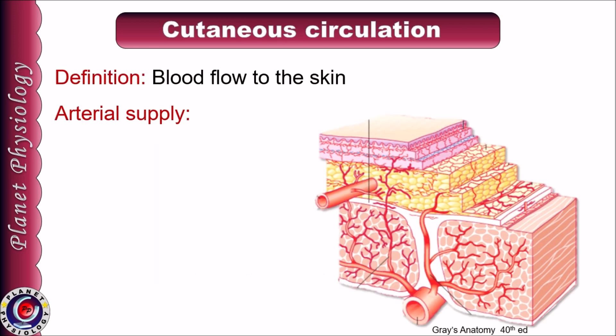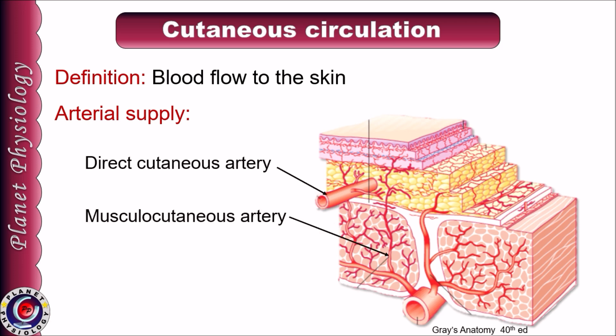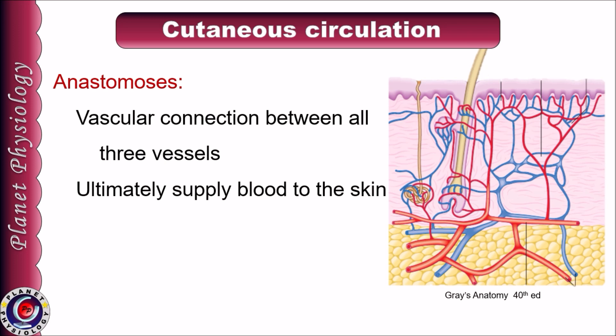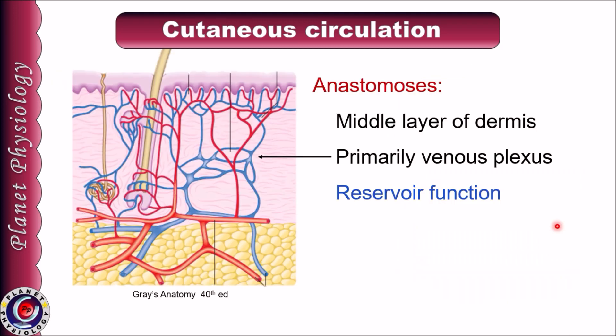Cutaneous circulation means blood flow to the skin. Skin receives blood from three main sources: a direct cutaneous artery, musculocutaneous artery, and fasciocutaneous artery. All these vessels have vascular connections between them — they form numerous anastomoses which ultimately supply blood to the skin.